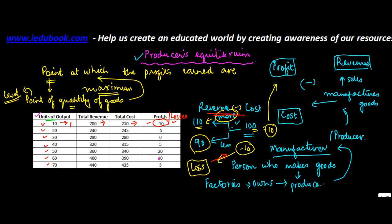As he kept on increasing his units of output, the profit or loss kept on changing. Initially it was minus 10, then it became minus 5, 0, 5, 20, 10, 5. If you notice the profit or loss column, the profit is maximum at 20, at the level of output of 50. So the manufactured quantity is 50 when he earns the maximum profit. We say that the level of output of 50 units is the point when the producer is at equilibrium.